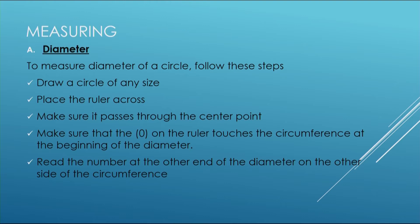We start with measuring diameter. How do we measure diameter? Just to remind ourselves, diameter is that long line which cuts across, running from one end of the circle to the other outer end of the circle. To measure the diameter of a circle, you follow the following steps. First, you draw a circle using a pair of compass, the tracing method, the string method, or any other method.